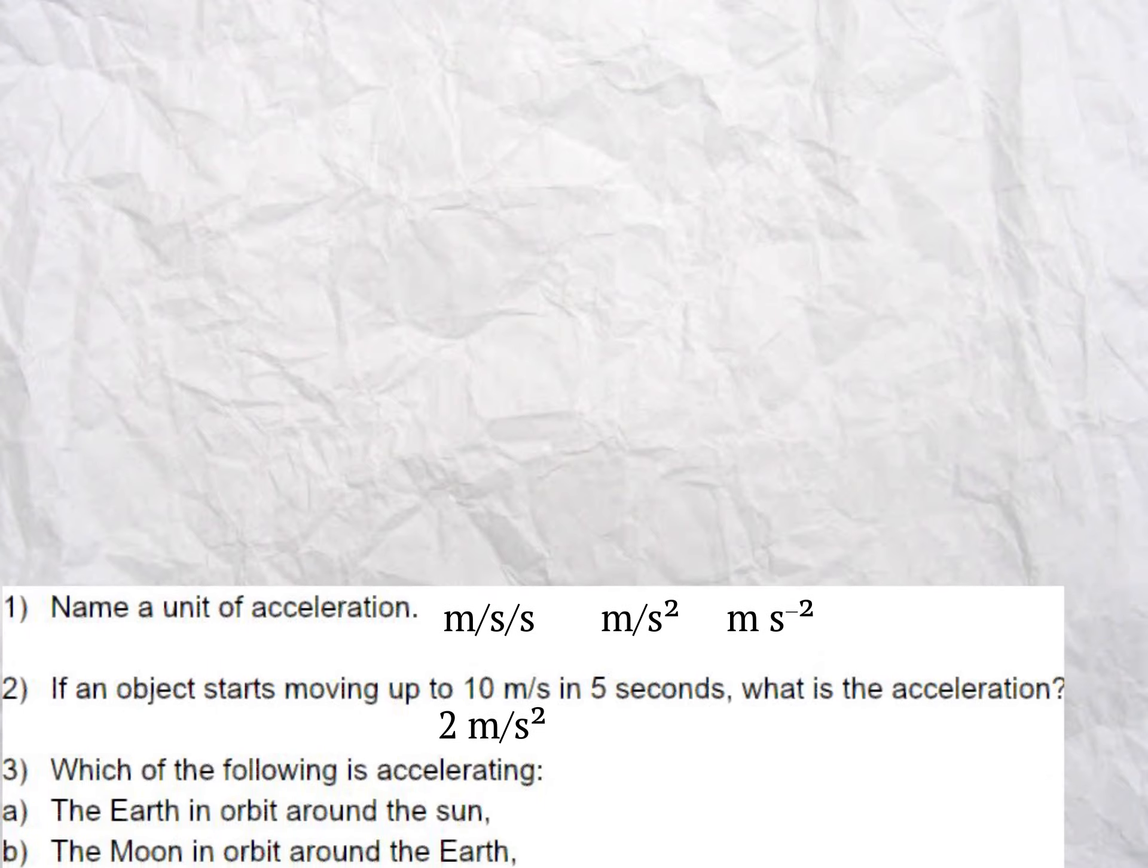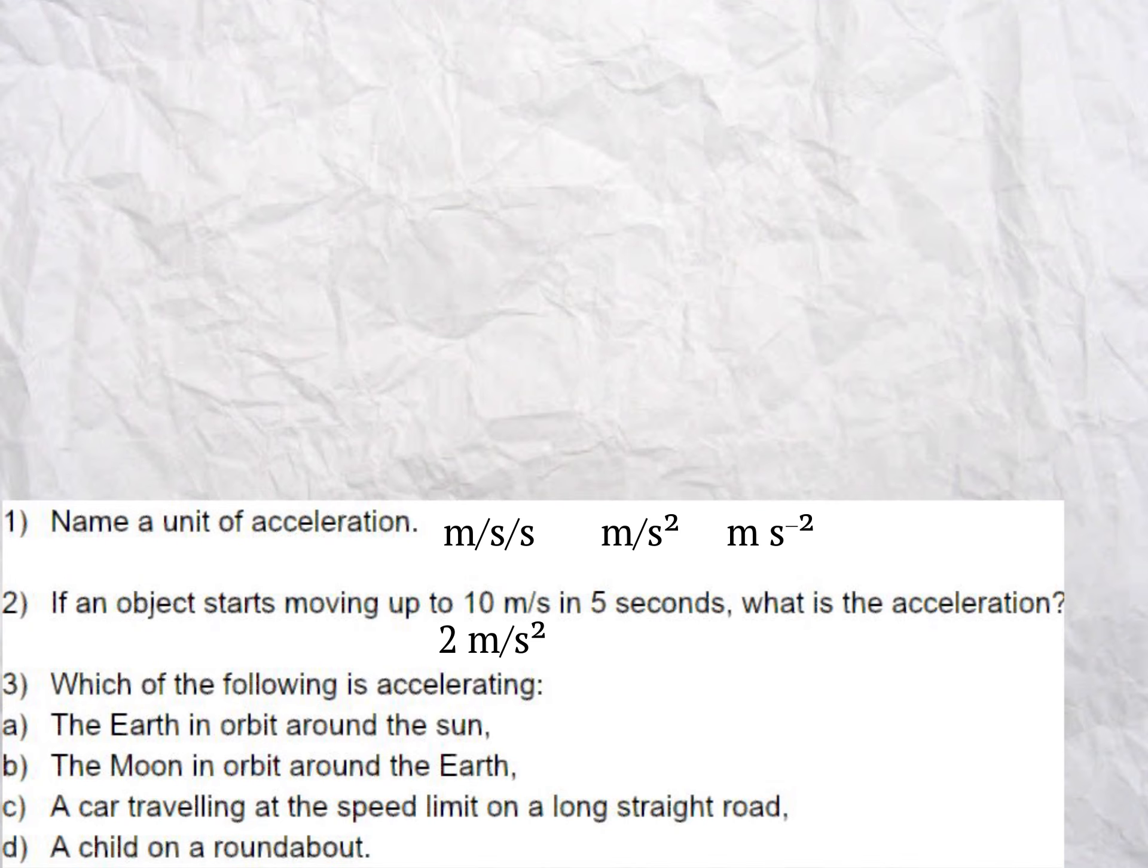Question 3. We need to spot which things are accelerating. If it changes speed or just changes direction, then it is accelerating. This means that a, the Earth in orbit around the Sun, is accelerating because it's in a circular path and is always changing direction. Likewise, b, the Moon, will be doing the same. Cars at a fixed speed on a straight road, though, will not be accelerating. Finally, the child on a roundabout is accelerating because they are changing direction as they spin.